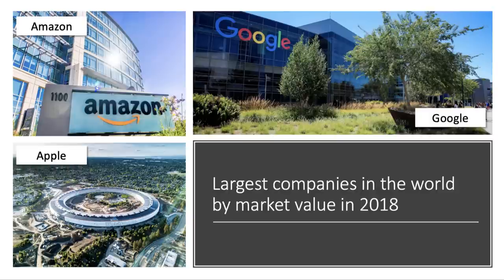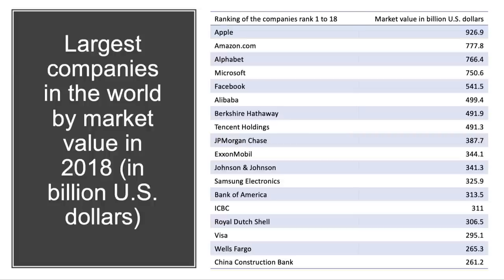What about the biggest companies in the world by market value — in terms of market capitalisation of their shares? That's the share price multiplied by the number of shares issued. As of 2018, the biggest three companies in the world are Amazon, Apple, and Google, otherwise known as Alphabet. Apple had a market valuation of just under one trillion dollars, and the table also includes some of the big oil companies and investment banks.